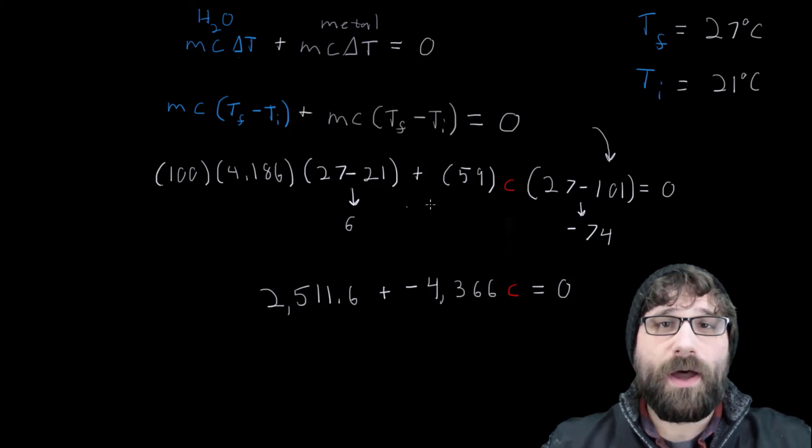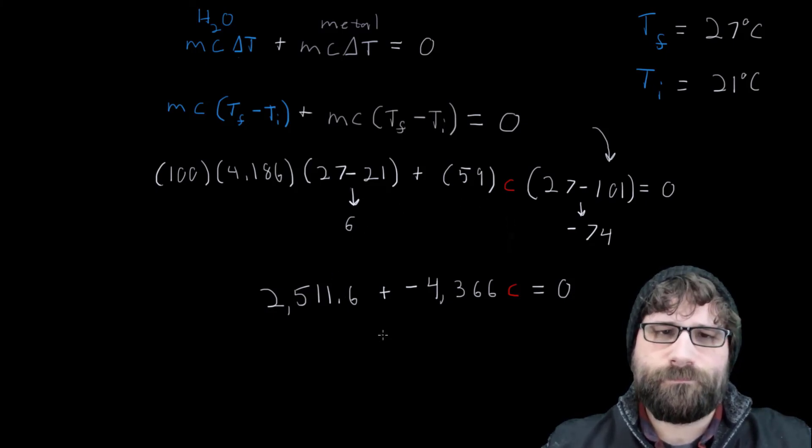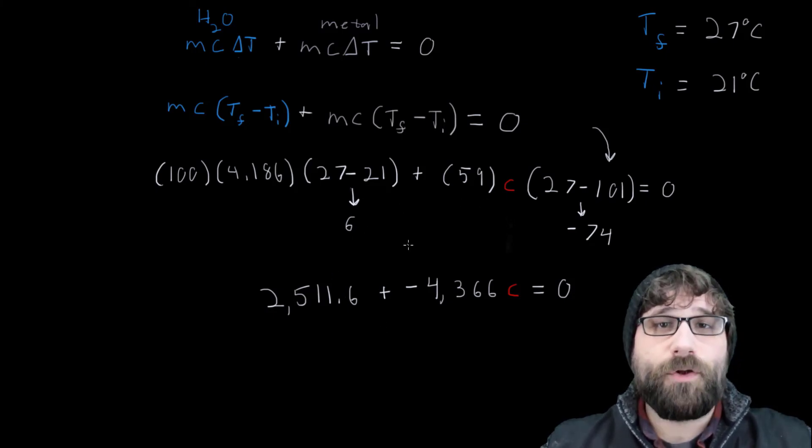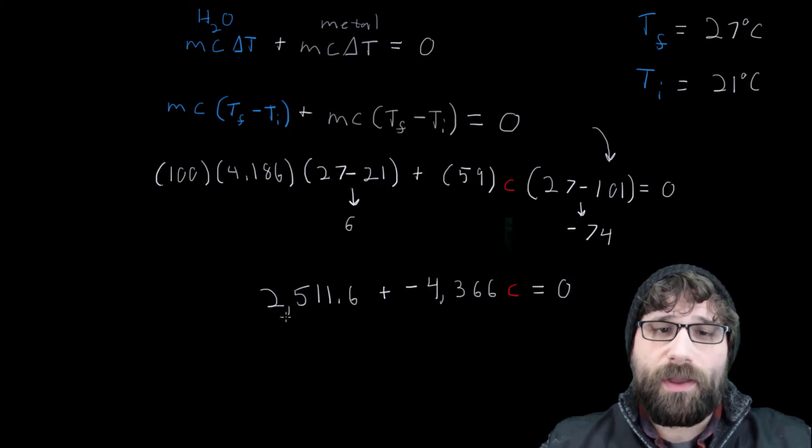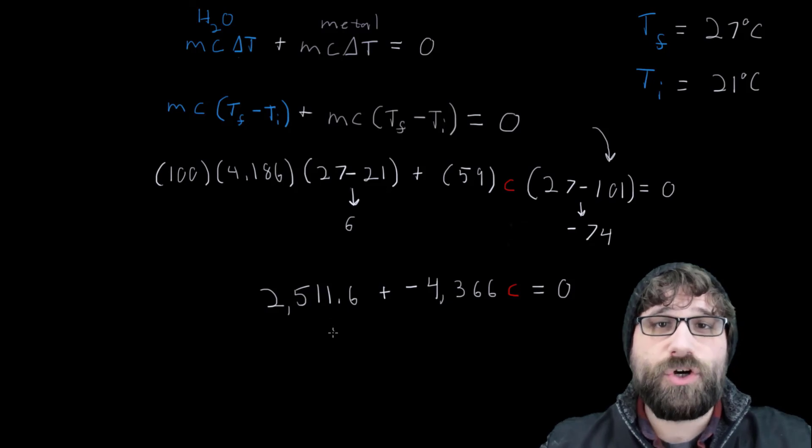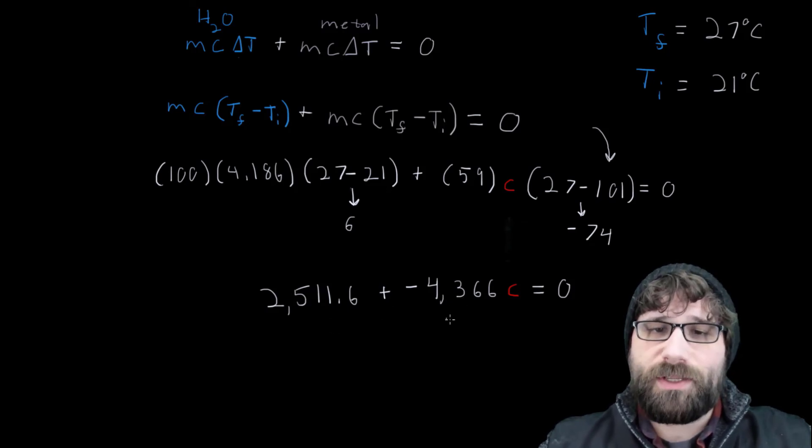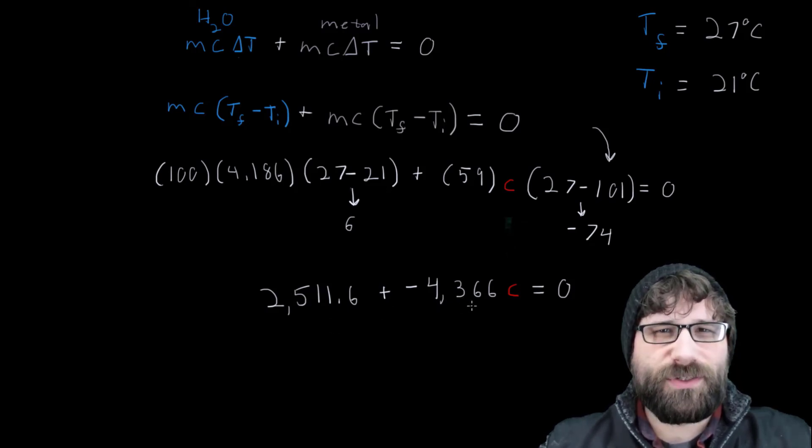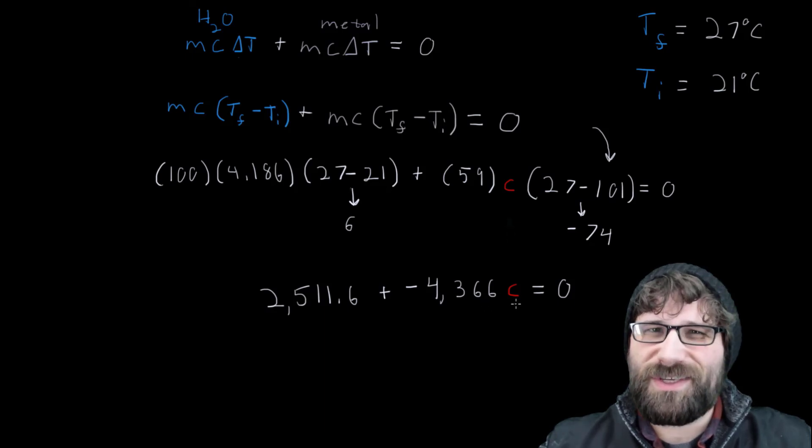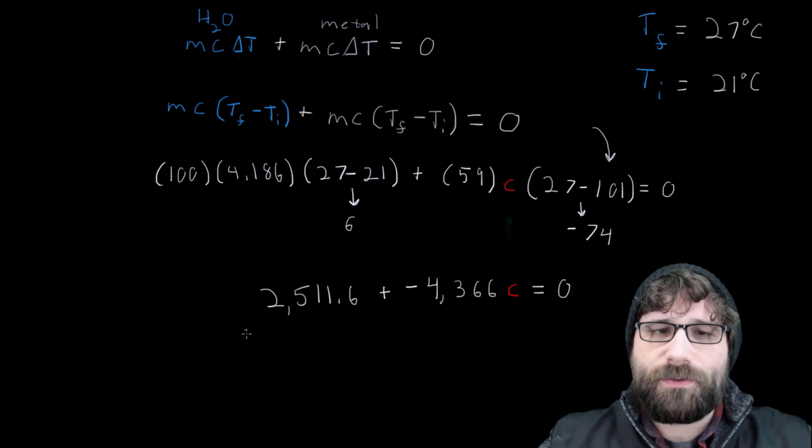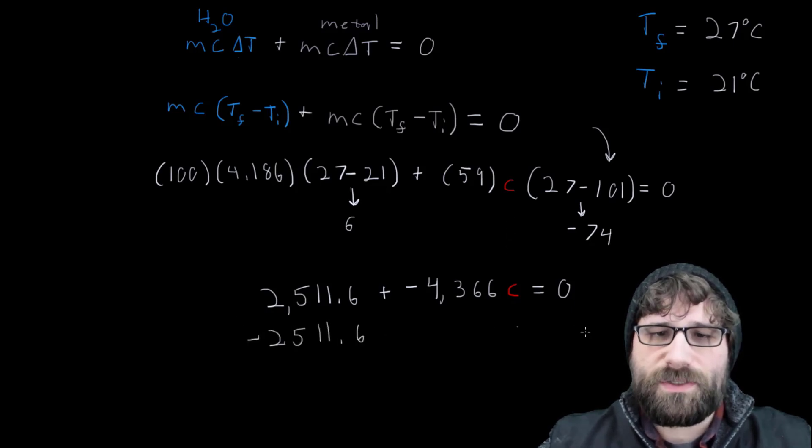I've multiplied my numbers together, and now I have 2,511.6 joules, that's how much the water took in, plus a negative 4,366 times C. And C is what I'm looking for. So now I'm going to solve for that by subtracting 2511.6 from both sides.